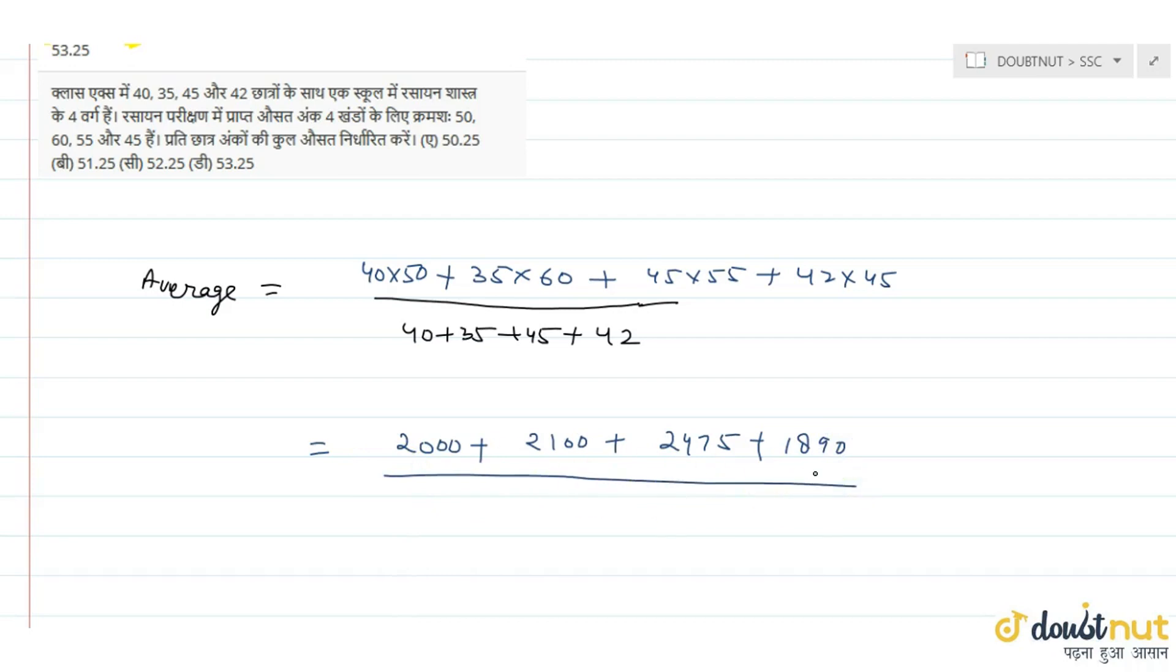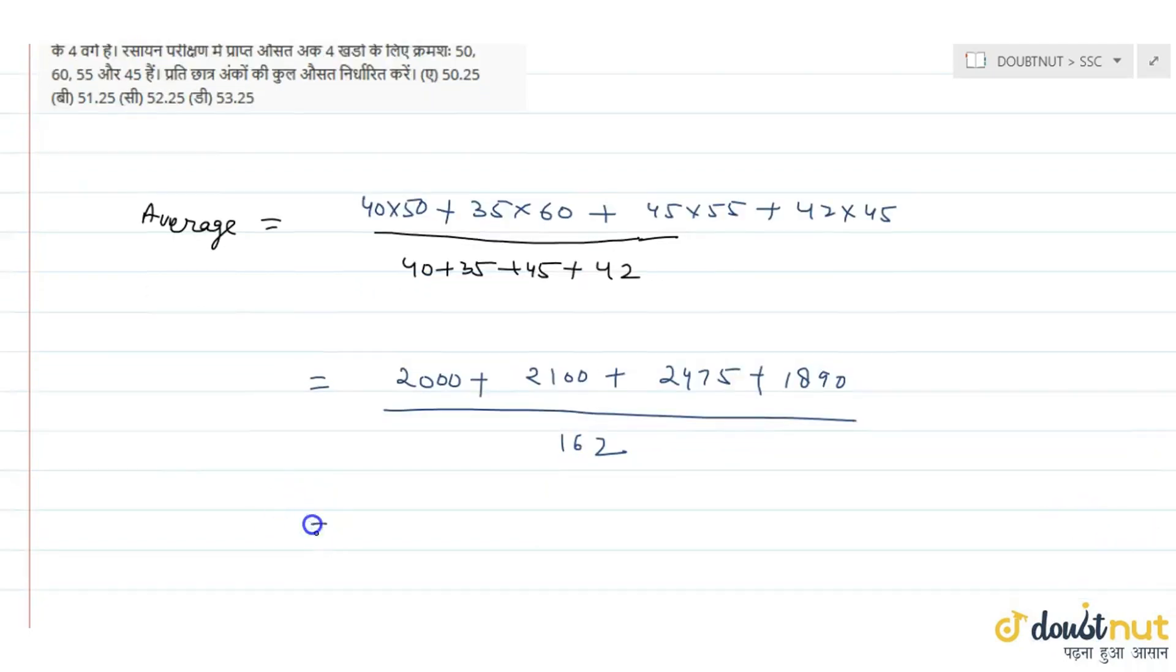Adding these: 40, 35, 45, and 42, that is 162. Now simplifying the numerator: 2000 plus 2100 plus 2475 plus 1890, that equals...